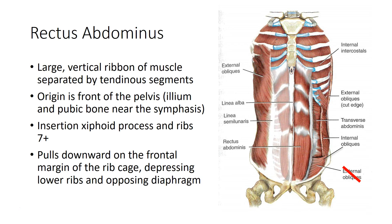The rectus abdominis muscles are a set of muscles that run vertically from the front of the pelvis on the ilium and the pubic bone near the symphysis, inserting into the lower ribs and the xiphoid process. The rectus abdominis is going to pull downward on the front margin of the rib cage and will depress the lower ribs as well as compress the abdominal viscera, working in opposition to the diaphragm.